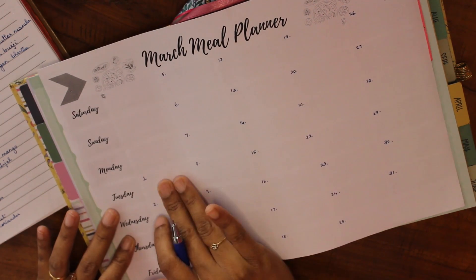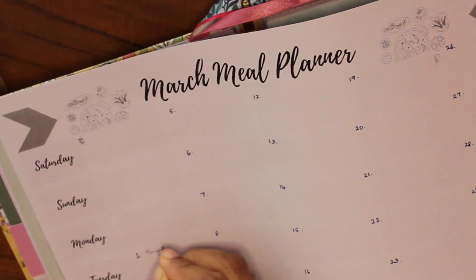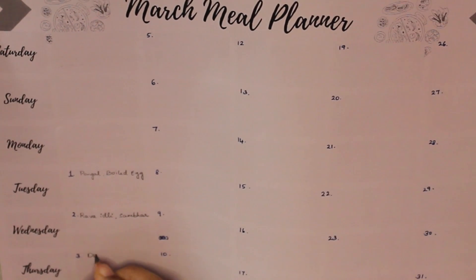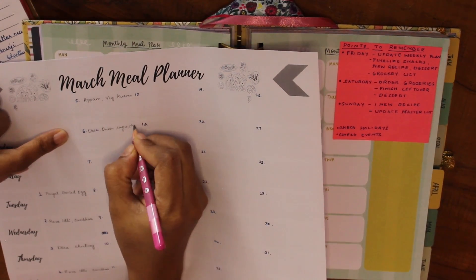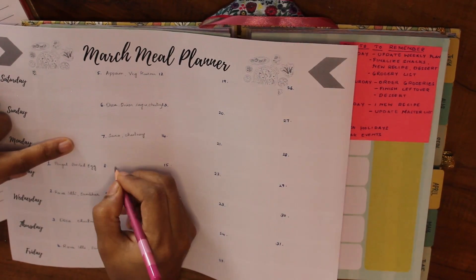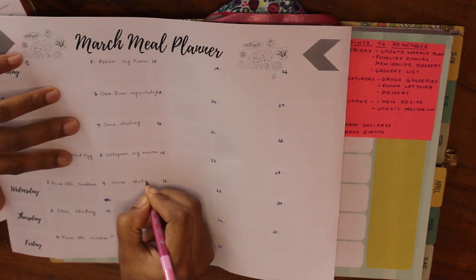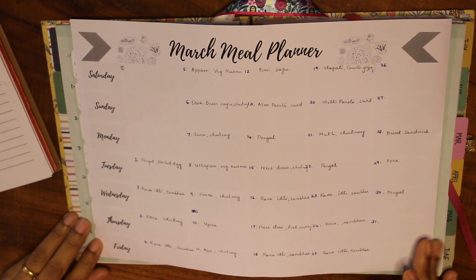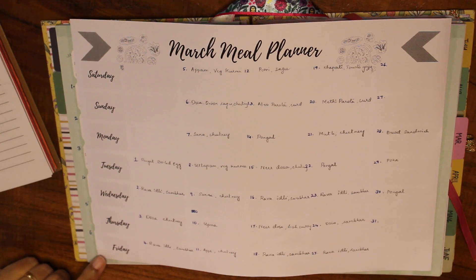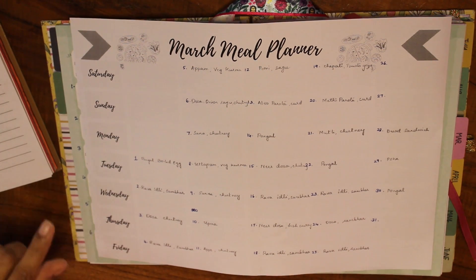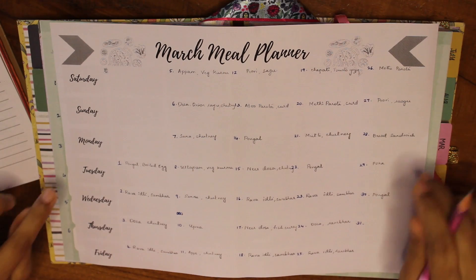We're starting from March 1st up to the 31st. You can pause this video and fill in your breakfast for the whole month — start with Tuesday and go through to the 31st. With this we've completed the breakfast planning. I hope you've all written down your breakfast for the month.